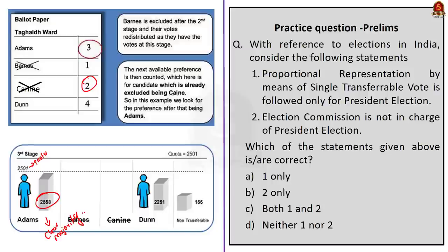I hope you have understood how the mechanism of proportional representation by single transferable vote works. Since the presidential election is being conducted this year, we can expect a question from presidential elections or on the powers and functions of the president. We will cover parts of this in our daily news analysis in the coming days. To recap, today we saw how the voting is done and how the counting is done under proportional representation by single transferable vote. Let us conclude and take up the next news article.